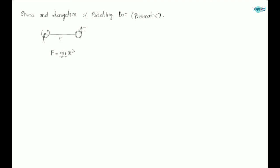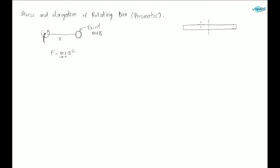This is a point mass, but we are considering a bar which means it is a uniformly distributed mass. So how do we find the stress and elongation of this rotating bar? Stress is force by area. The centrifugal force acting on this bar is different at different cross sections.